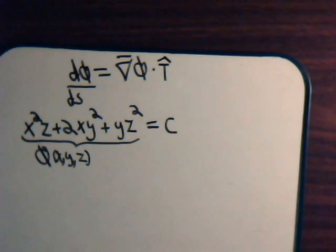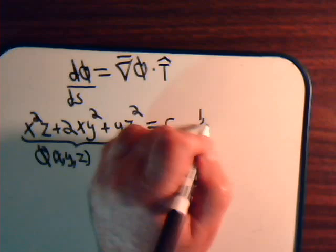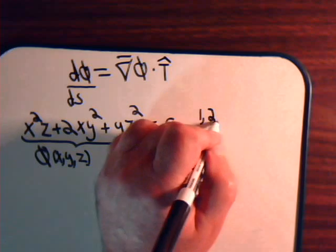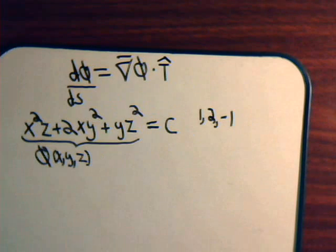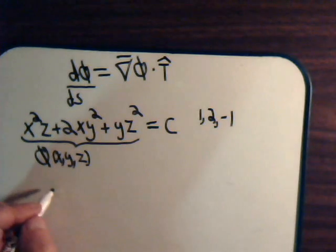And it's equal to a constant. So this is some surface in three-dimensional space. Now, let's say on the surface we're at the point X is 1, Y is 2, Z is minus 1.